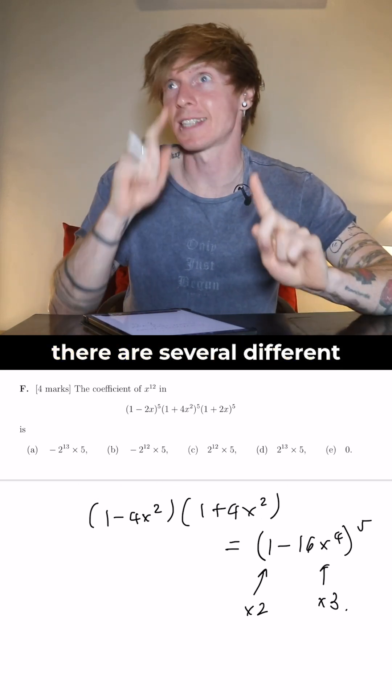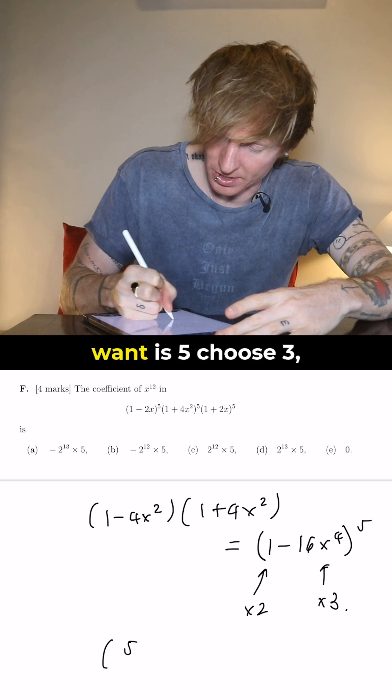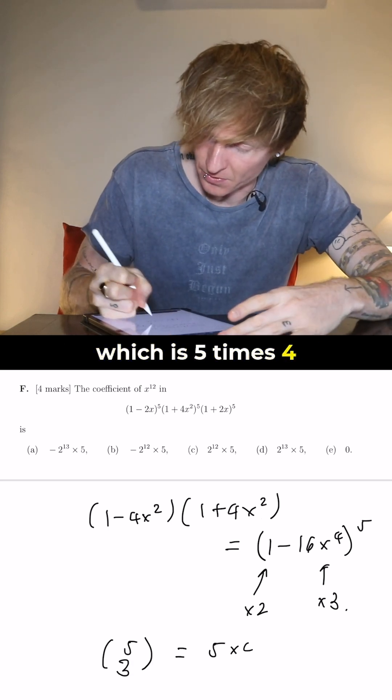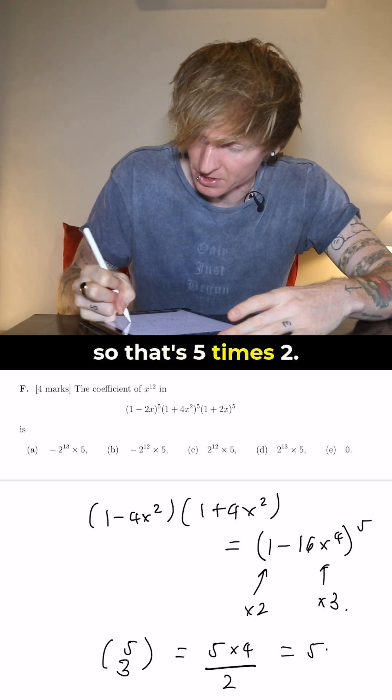Now there are several different ways to do that, so the binomial coefficient we want is 5 choose 3, which is 5 times 4 divided by 2, so that's 5 times 2.